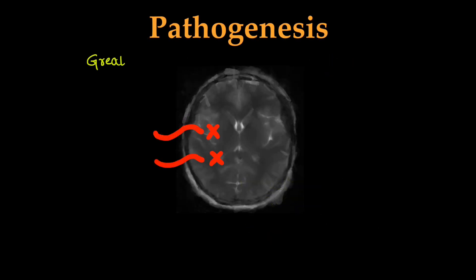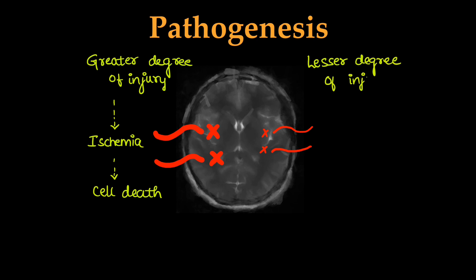This cell damage or death will depend on the degree of injury. Greater the degree of insult, there will be immediate ischemia and cell death. Lesser the degree of insult, cells will survive the initial insult but will later undergo programmed cell death known as apoptosis.